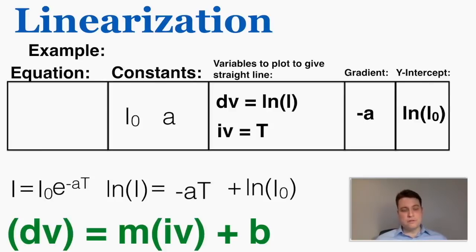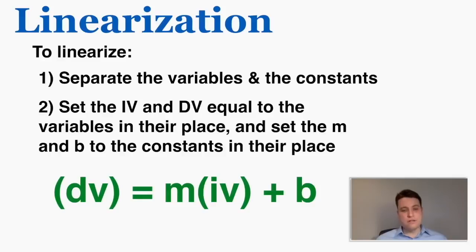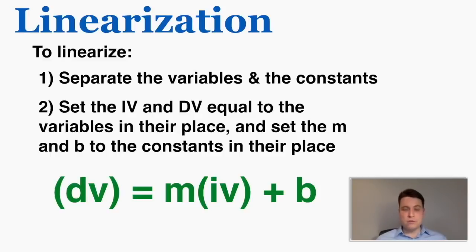In conclusion, these are the two steps you have to take to linearize a function, and the form that all linear functions take is: dv equals m times iv plus b. You can use this for most functions that we deal with in this class, and this will come up over and over again in your lab reports throughout the year. That's all I need. Thank you for watching.